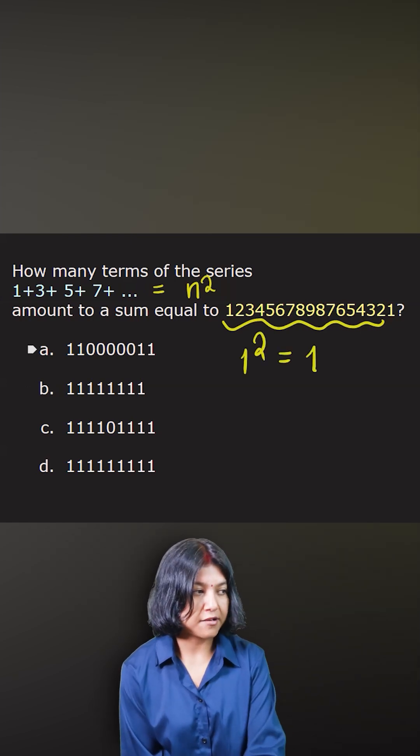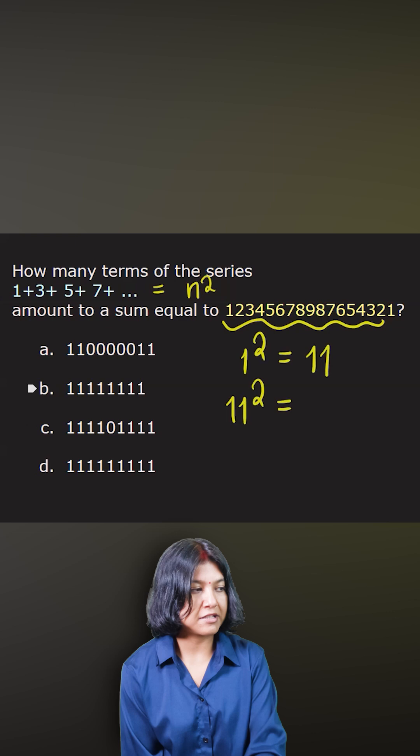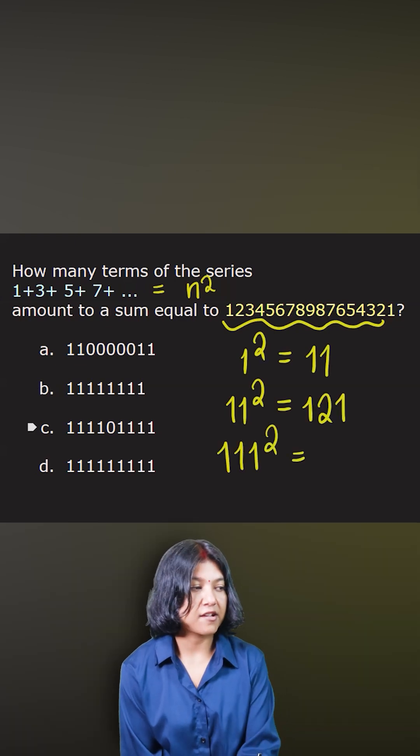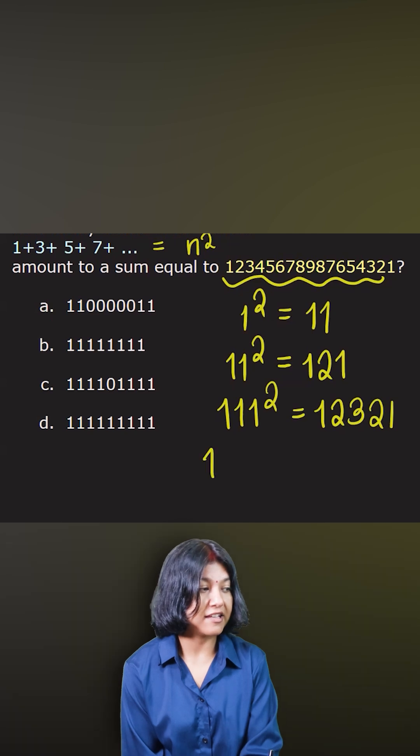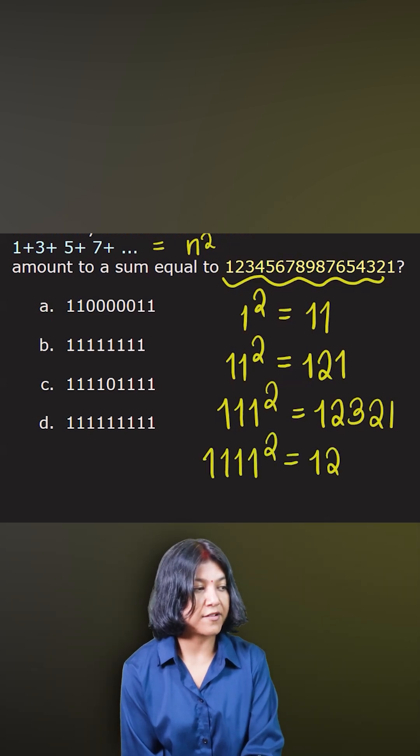One square is one, 11 square is 121, the square of 111 is 12321. If you'll keep going on like this, then you will see that whatever number of ones you have, you'll go ahead and write down the numbers in series 1234 and then take the mirror image of that.